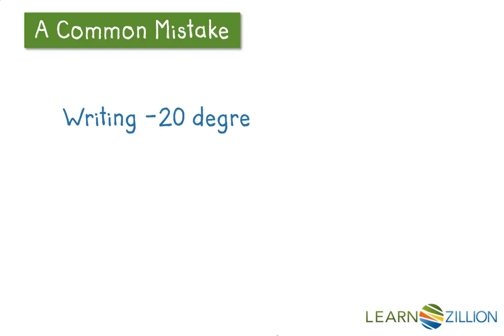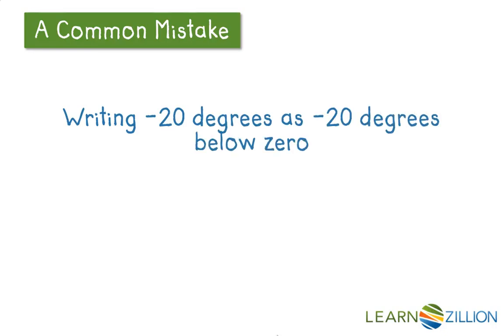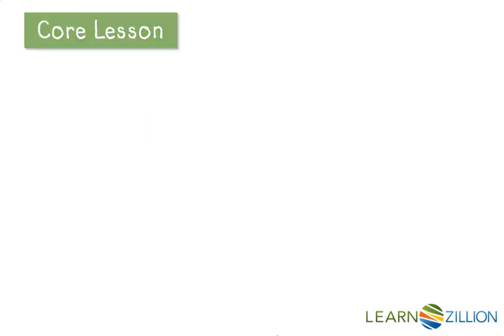A common mistake is writing negative 20 degrees as negative 20 degrees below zero. If you're saying negative 20 degrees, you don't need the words below zero.